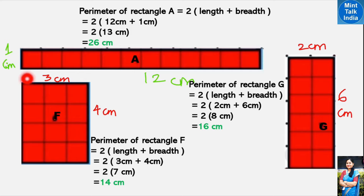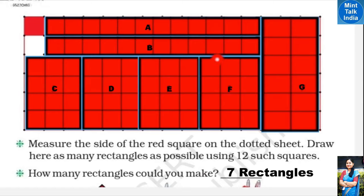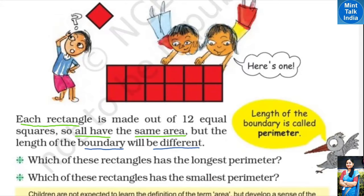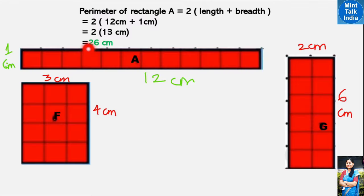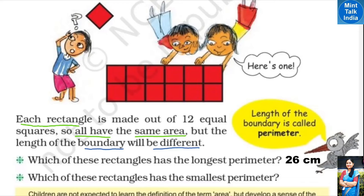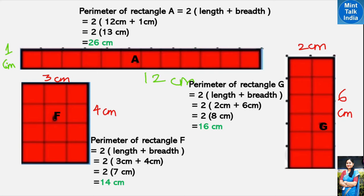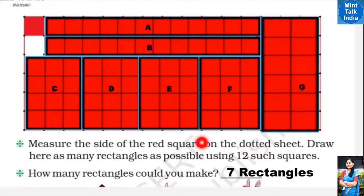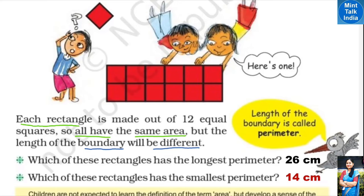Here four rectangles — C, D, E, and F — are the same size, so if the perimeter of F is 14, then the perimeter of E, D, and C is also 14 cm each. The rectangle with the longest perimeter is rectangle A at 26 cm. The rectangle with the smallest perimeter is 14 cm.